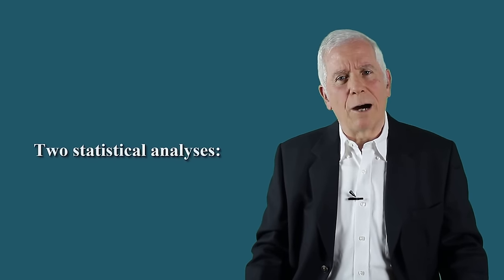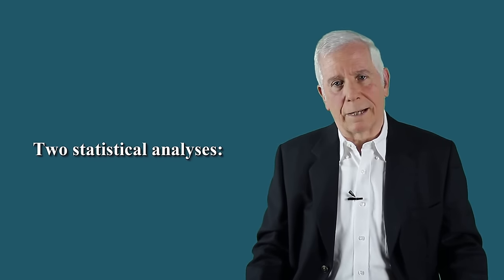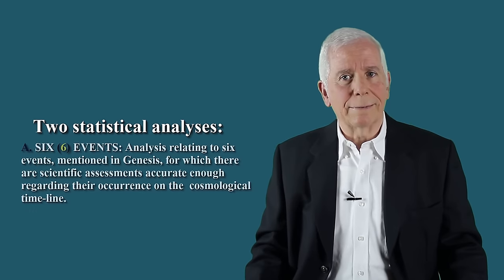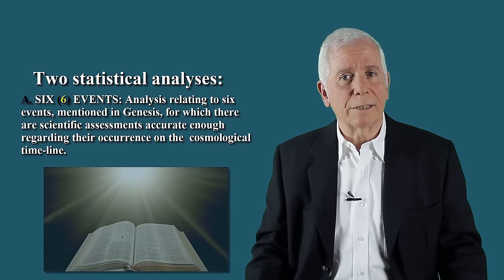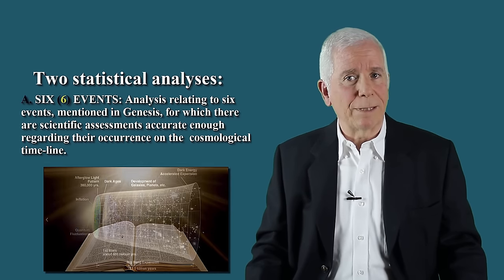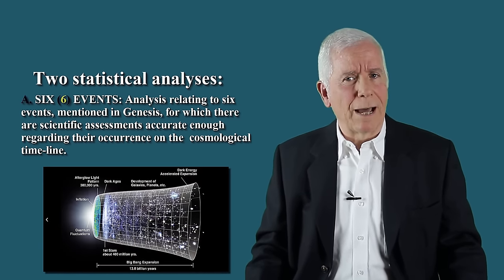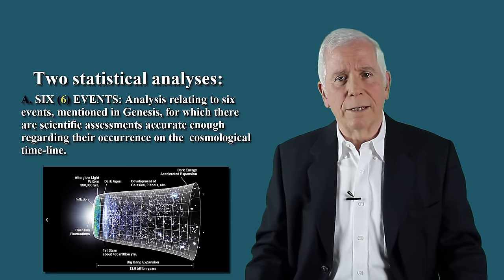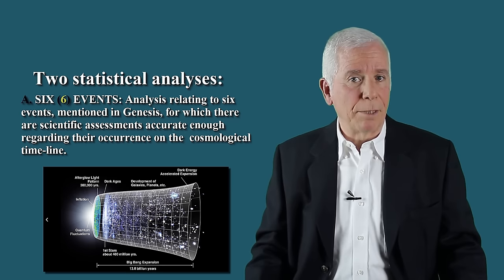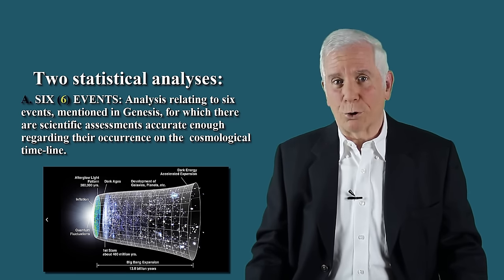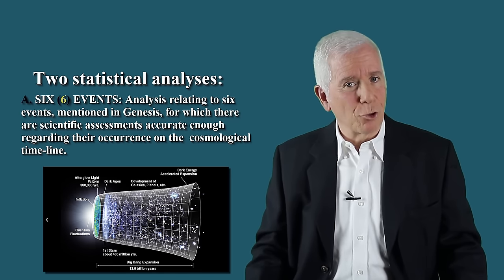We have carried out two separate statistical analyses. Analysis relating to six different events mentioned in Genesis, for which there are scientific assessments accurate enough regarding their occurrence on the cosmological timeline, in terms of billions of years since the Big Bang. A plot of this point is now shown.